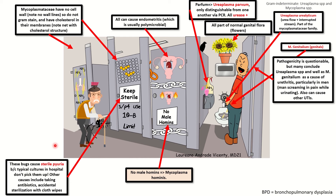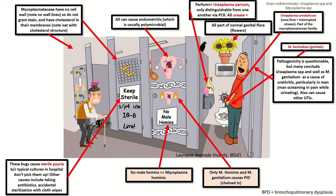All can cause endometritis, which is usually a polymicrobial infection, and that is represented here by the crying uterus. Only M. hominis and M. genitalium cause PID, and that is represented by the crying uterus with the flames around it for pelvic inflammatory disease. It is chained in here to represent the fact that only mycoplasma hominis and genitalium cause pelvic inflammatory disease.